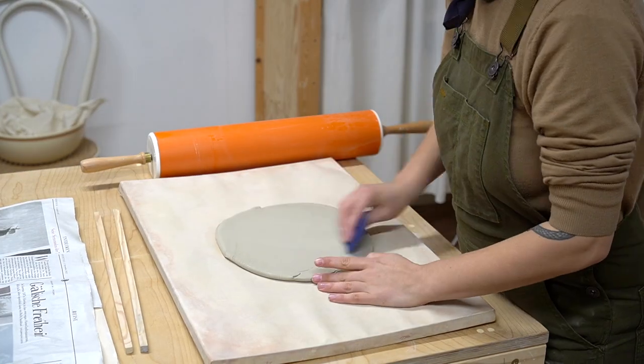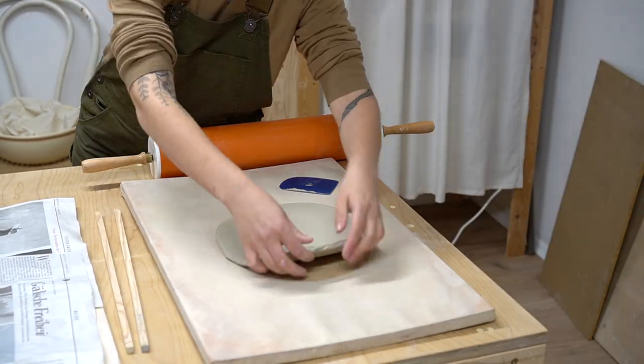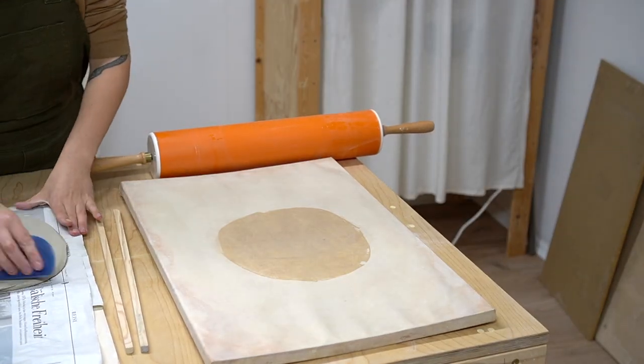Don't forget to compress your clay with a rib after rolling it out. This will help later with warping and remove the texture from the canvas.